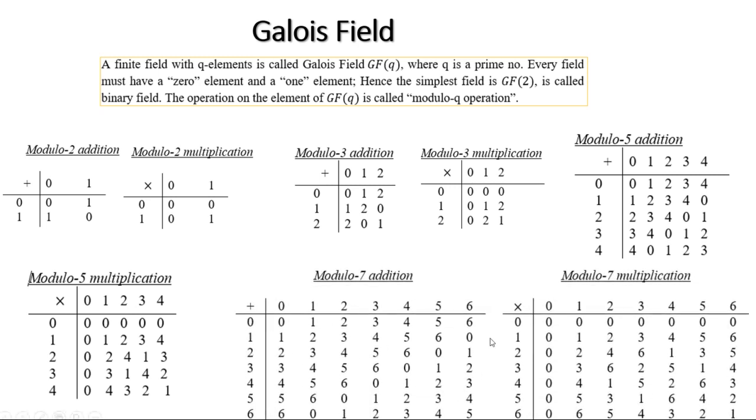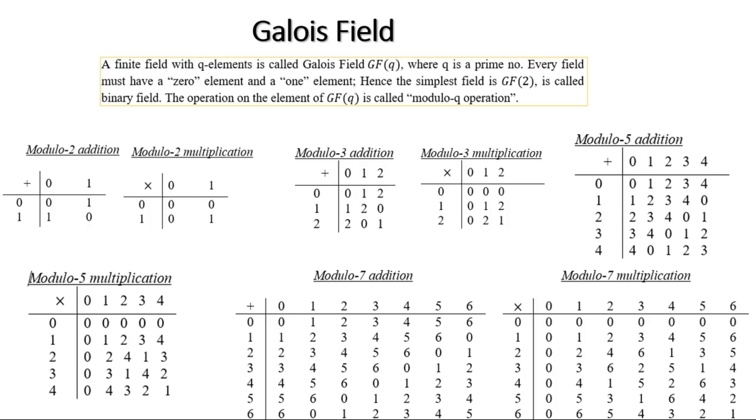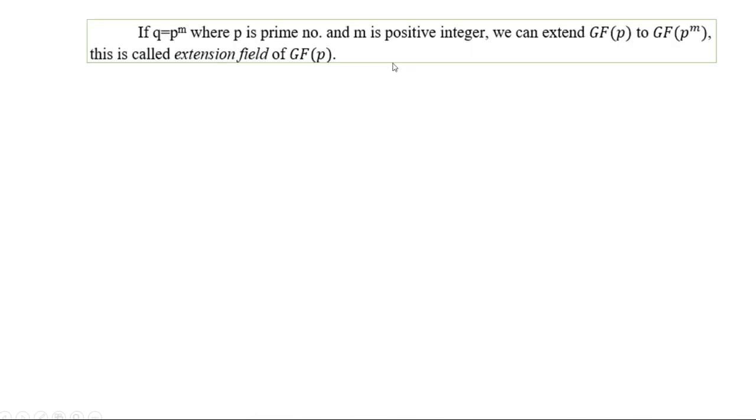This is the modulo Q operation. If Q equals—if we consider in place of Q, if you write in place of Q, P to the power M—if I substitute Q equal to P to the power M, then that field will be called the extension field of GF of P.